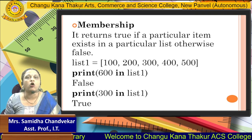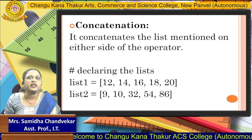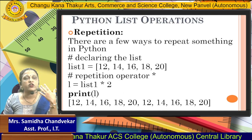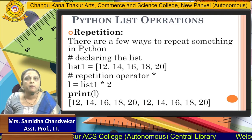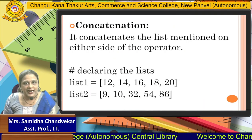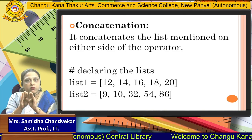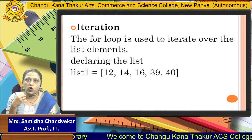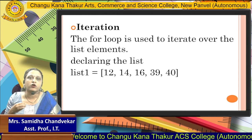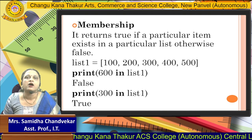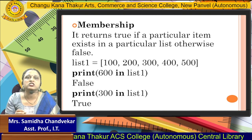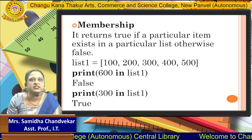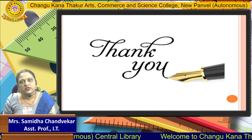So these are the operations on Python lists. The first is repetition — if you want to repeat the list. Second is concatenation — if you want to merge two lists. Third is iteration — if you want to visit every element from the list. And fourth is membership — if you want to find out whether a particular element is present in that list or not. Thank you.